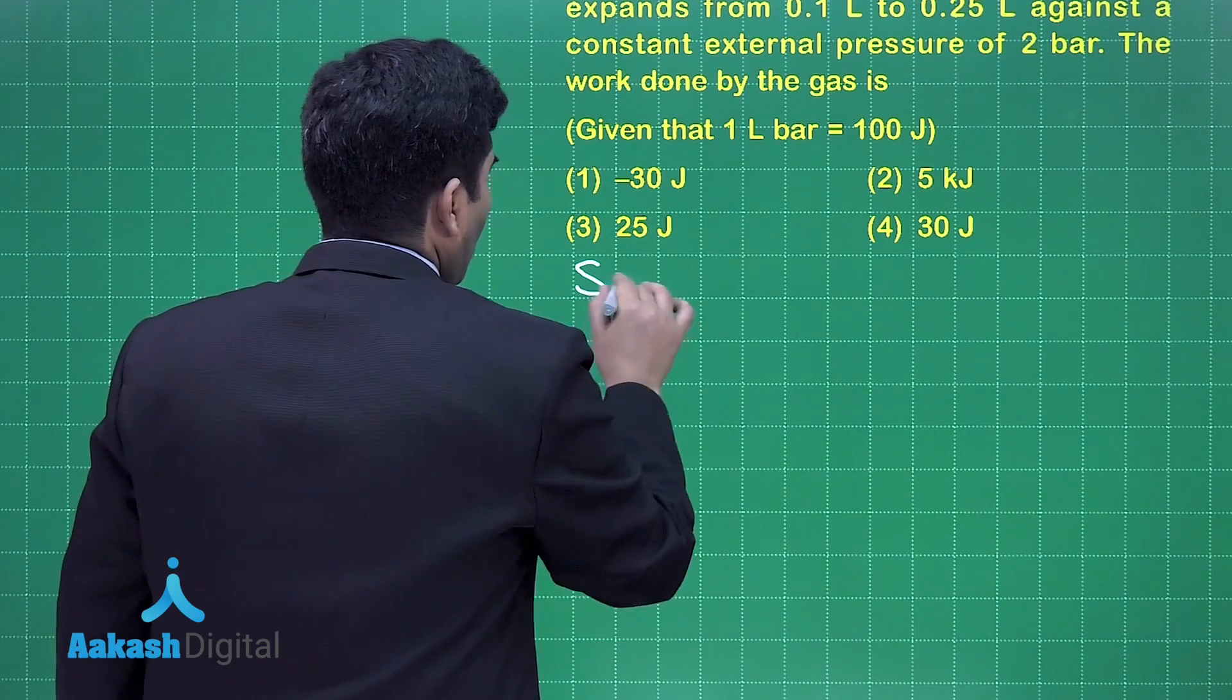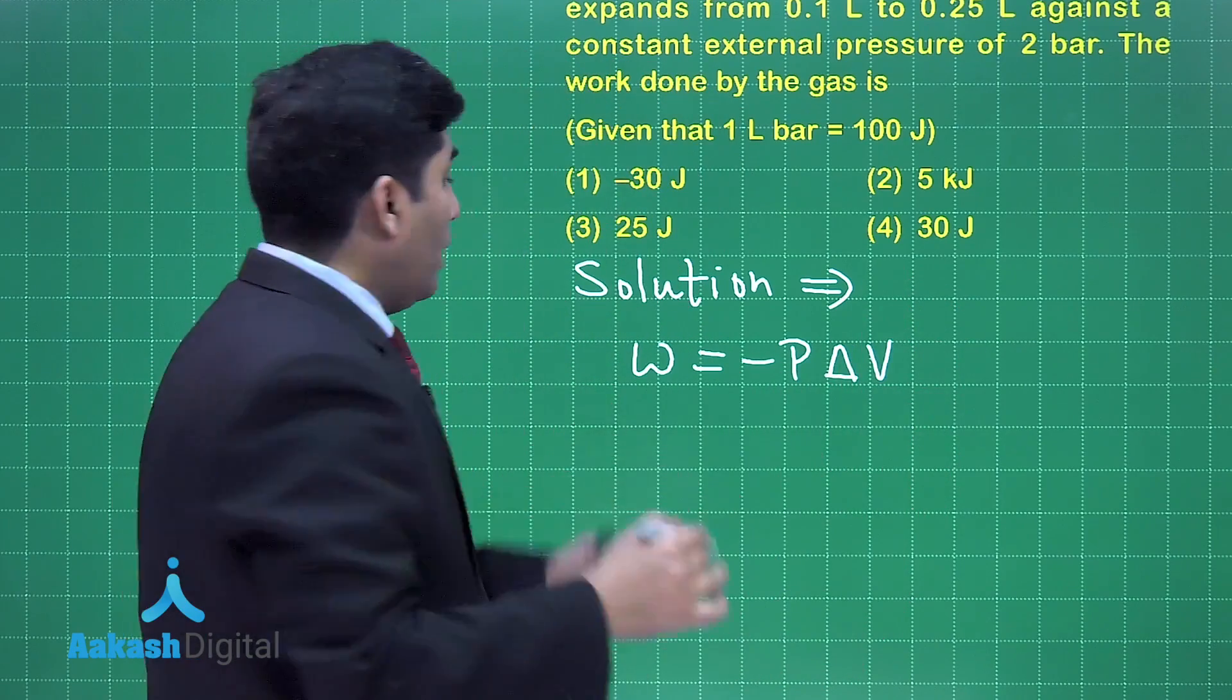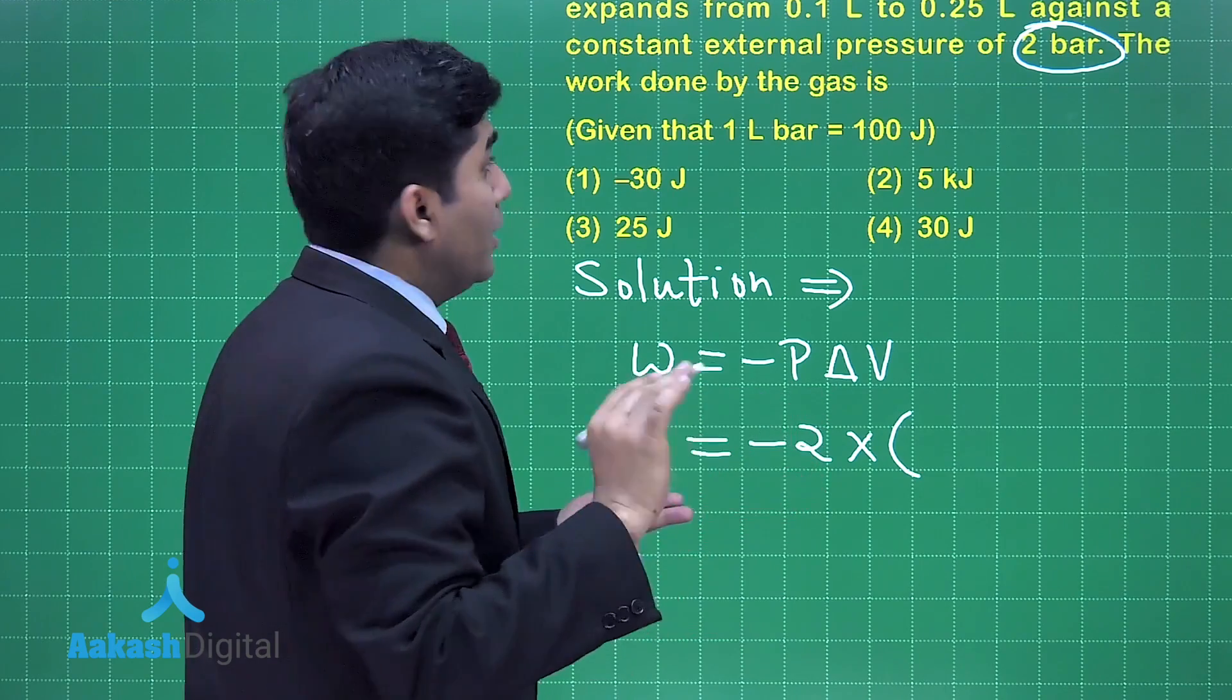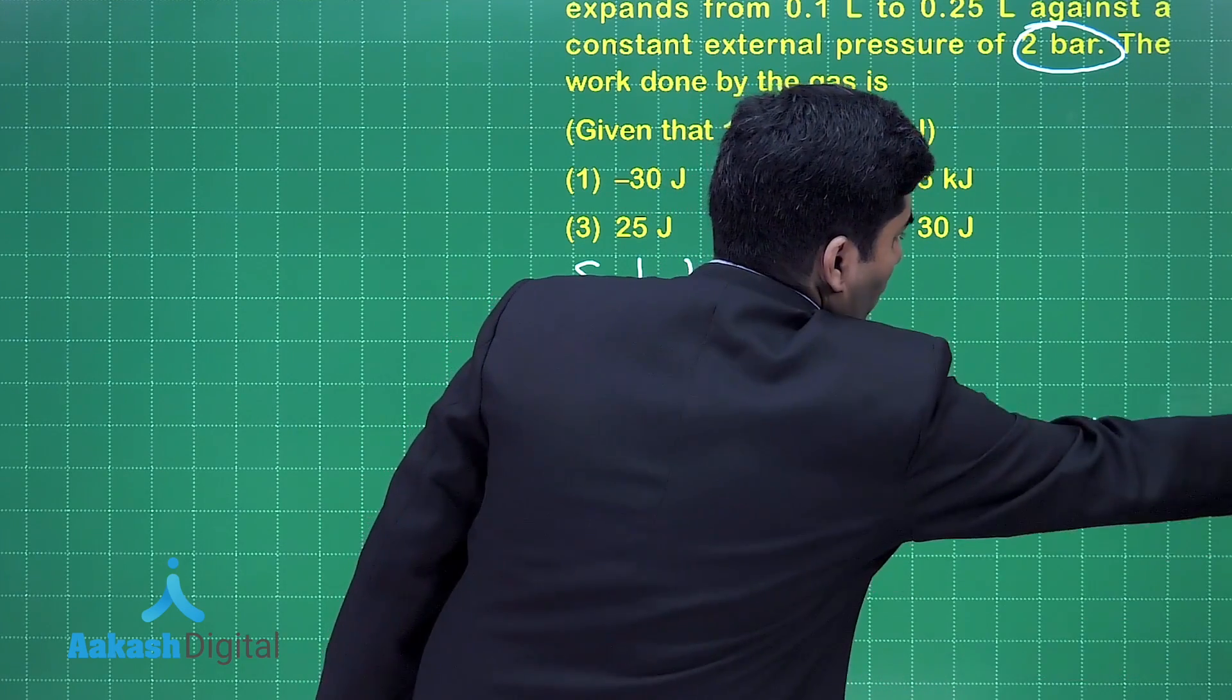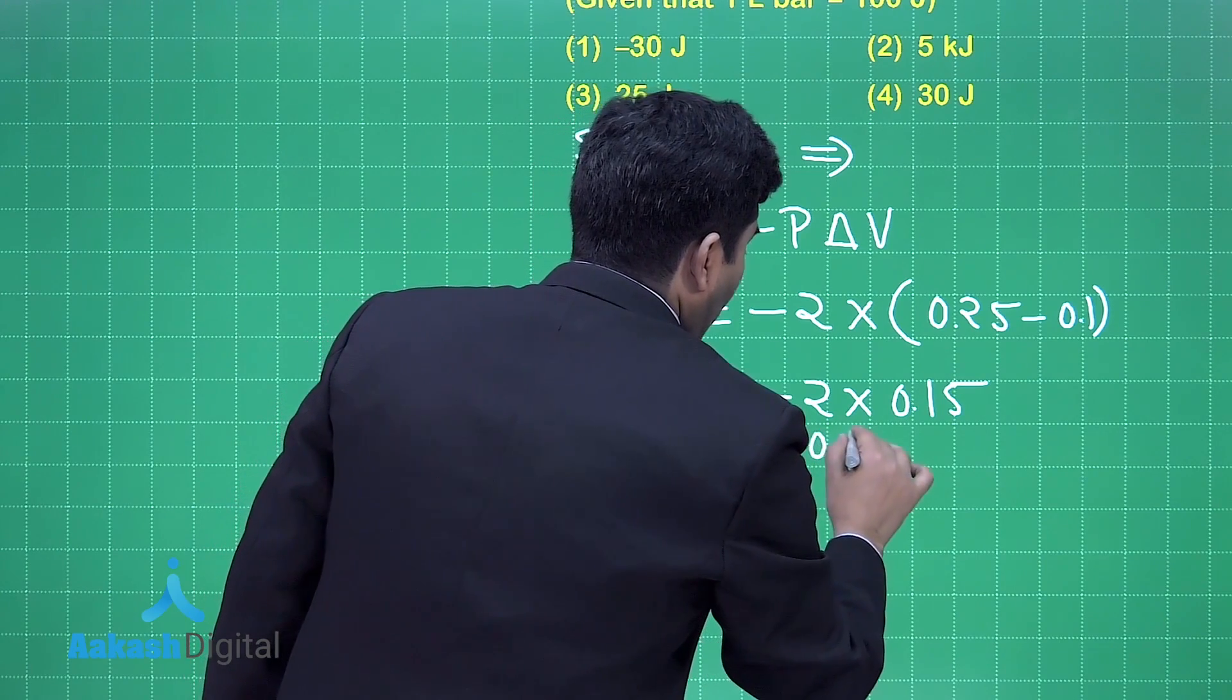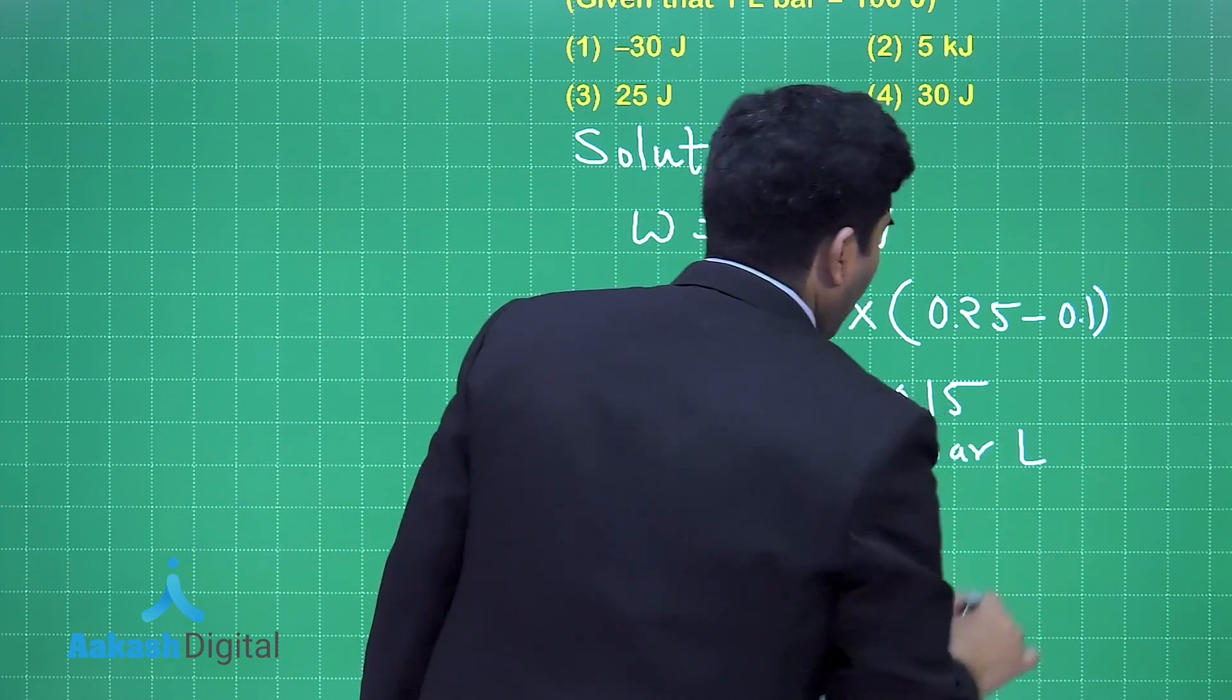So the solution: we know that work done is equal to -P∆V, and what is P? That is P external. And if we put the value, then the pressure is 2 bar so it is equal to 2 multiplied by... now ∆V is the change in volume final minus initial, that's why we will write 0.25 - 0.1. Right, now if you solve it further, -2 × 0.15 and it will be -0.3. But pressure is given in bar and the change in volume will be in liters, that's why it will be bar liter.